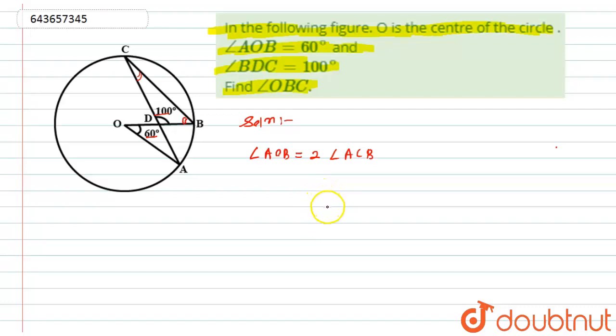This is because angle at center is double the angle at the circumference subtended by the same chord. From here, angle ACB will be equal to angle AOB which is 60 degrees multiplied by one-half, which equals 30 degrees.